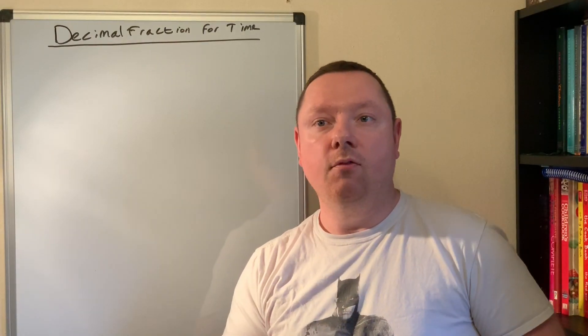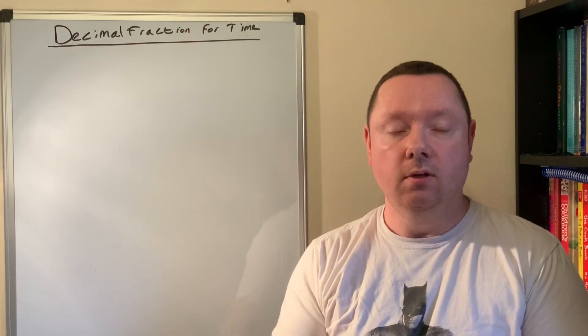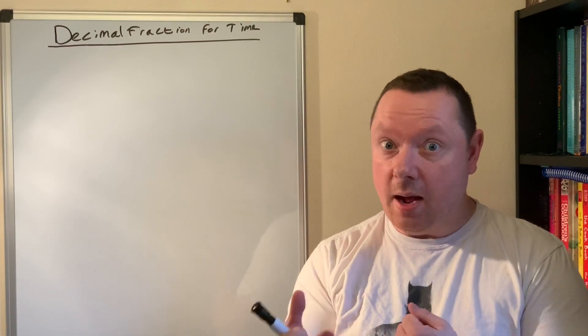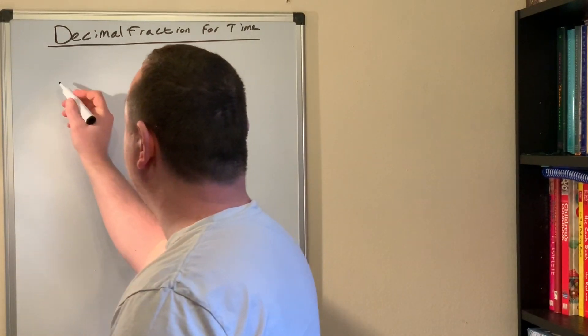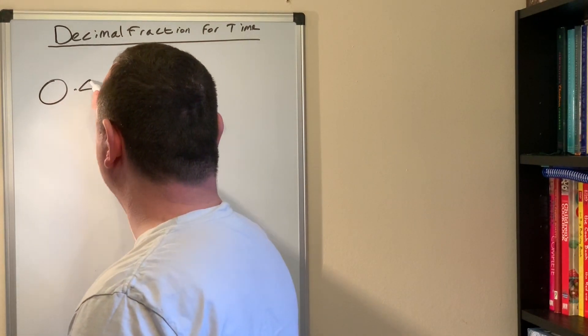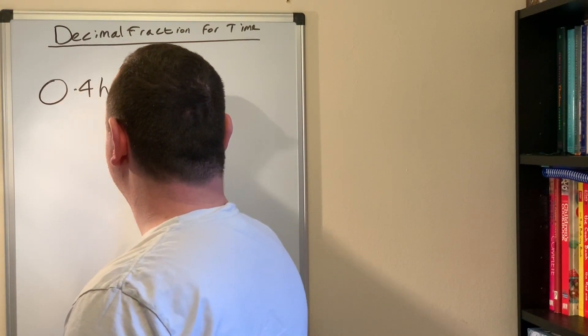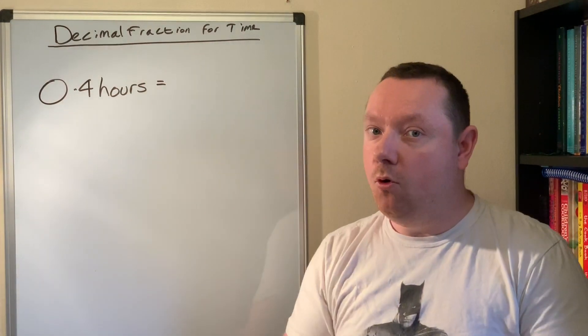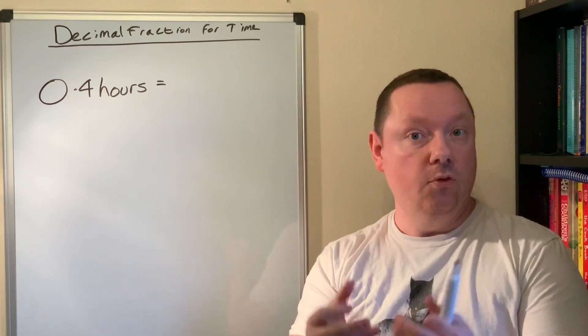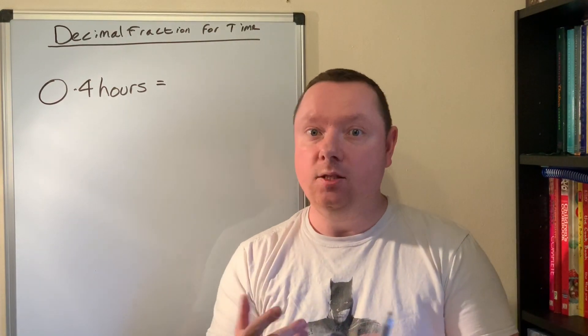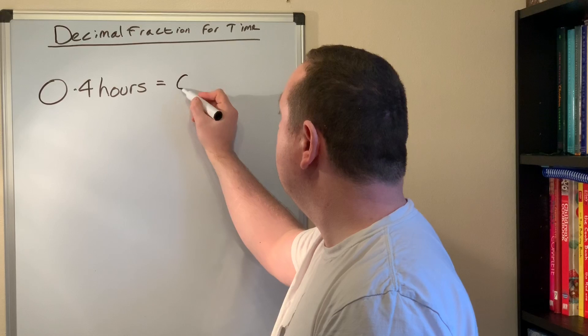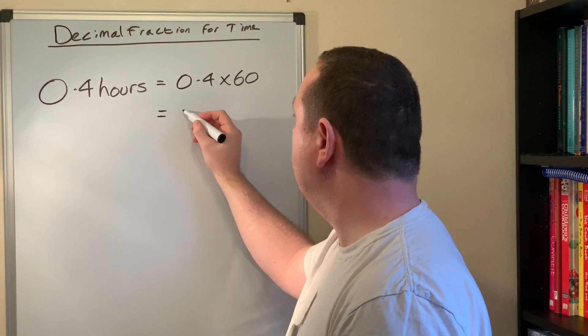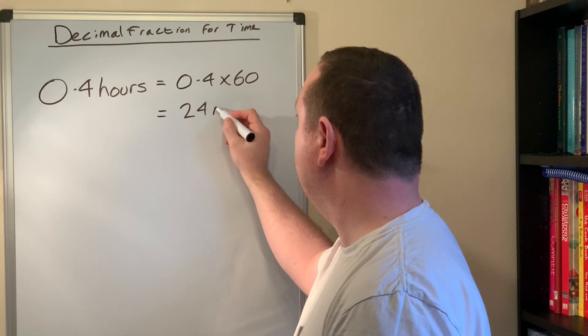We want to know if we've got a decimal hour like 0.4 hours, we want to know how many minutes that would be, so we can go backwards as well. I'll do an example here. If I had 0.4 hours and I want to change that to minutes, well before we divided by 60 so we'll do the opposite if we're going the other way: times by 60. So I just need to do 0.4 times 60, which would give me 24 minutes.